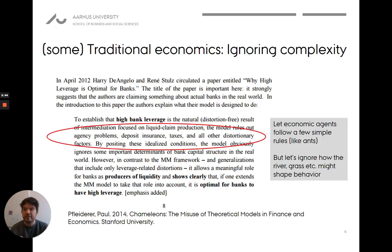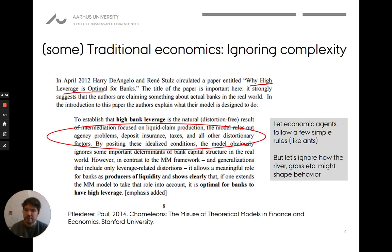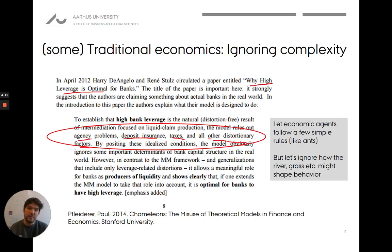A critique complexity can provide is that some traditional economist approaches have explicitly tried to remove the complexity of the world. For example, there is a paper that tried to study whether high leverage is good for banks — spending the same money in many contexts, borrowing the same coin to many different people at once. They rule out deposit insurance, taxes, individual agency, what individuals might do in different situations, and all other distortionary factors. They're basically taking away all the elements that make an economic system complex in order to look at it from an isolated perspective. The complexity angle says that's just not a full understanding of the challenge we are facing.